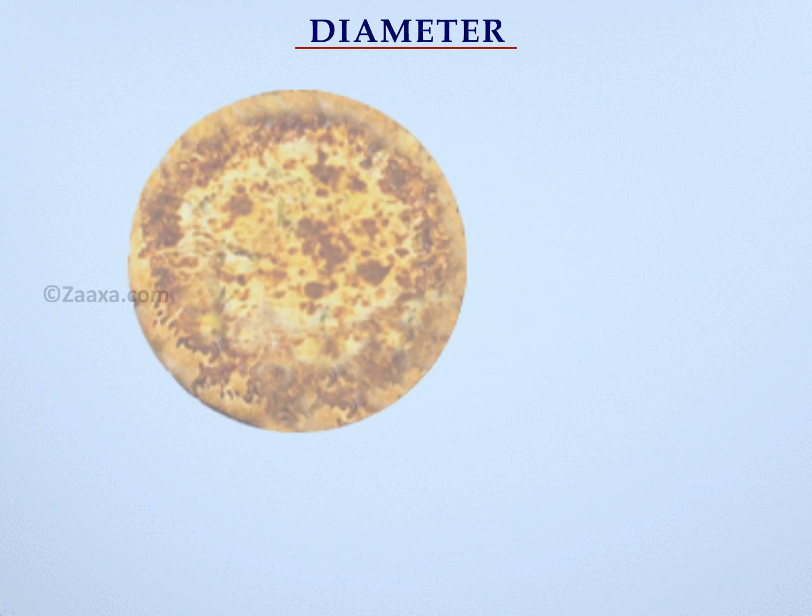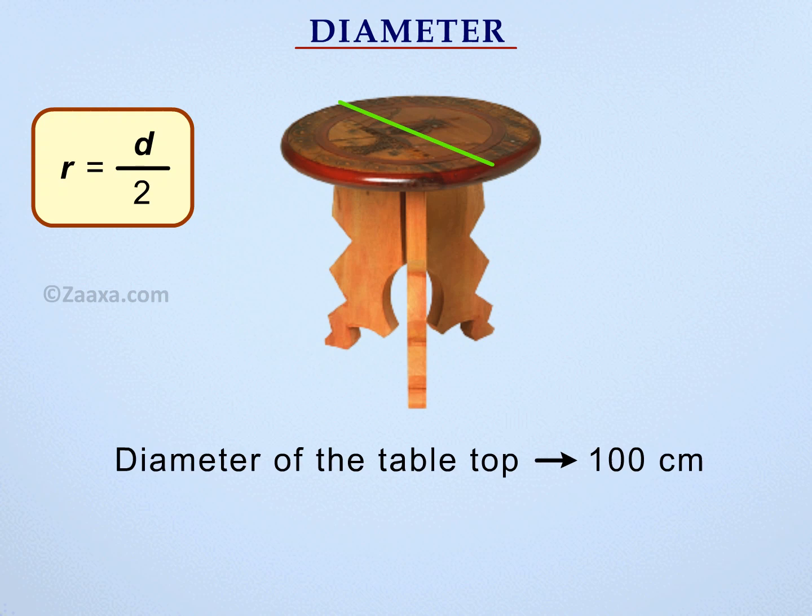Similarly, if the diameter of a round table is 100 cm, we can easily find its radius by dividing the diameter by 2. Radius is equal to half the diameter. Therefore, the radius of the table top is 50 cm.